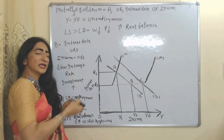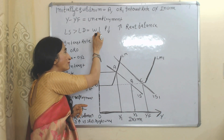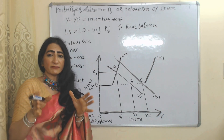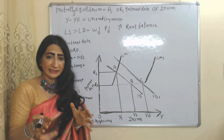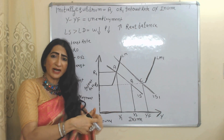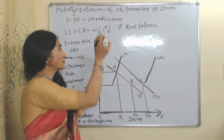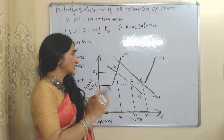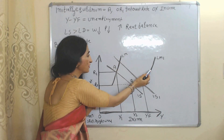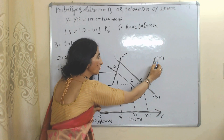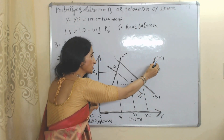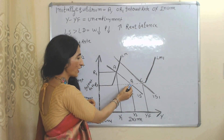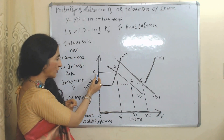If labor supply is more than labor demand, wages fall. As wages fall, prices also fall. When wages of labor are very low, there will be less demand, and eventually prices will also fall. As prices fall, real balance will increase. As real balance increases, the LM curve shifts rightward to a new LM curve, touching at point B.